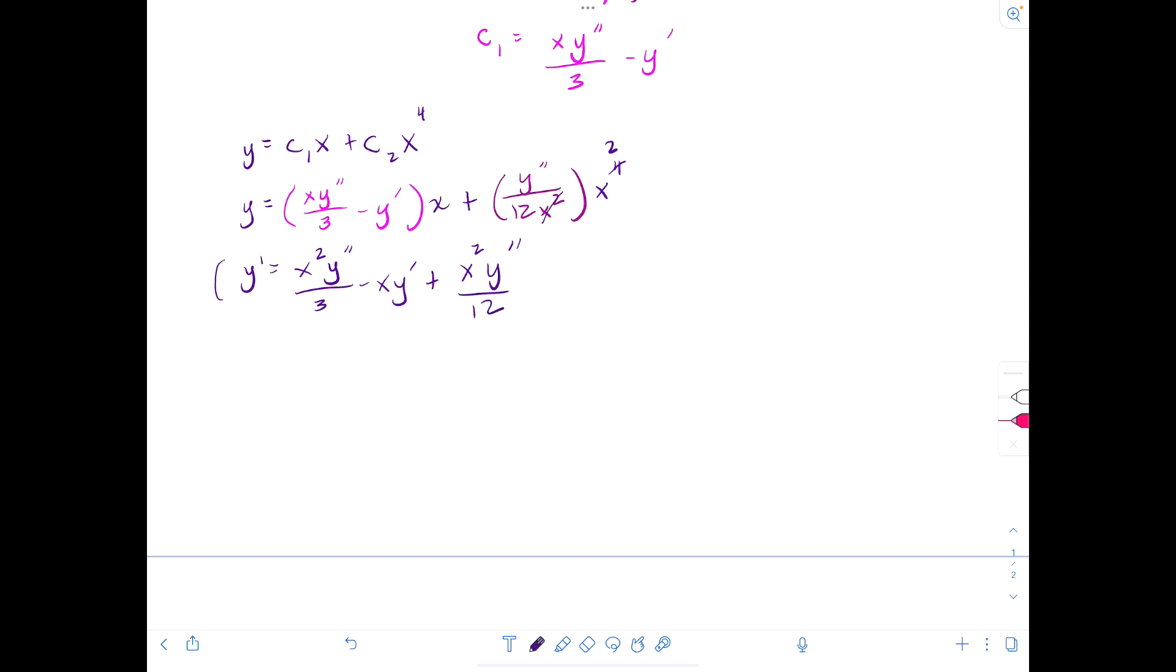And then let's clear out the denominator. The LCD is 12. So we'll have 12y equals 4 x squared y double prime minus 12 x y prime plus x squared y double prime.